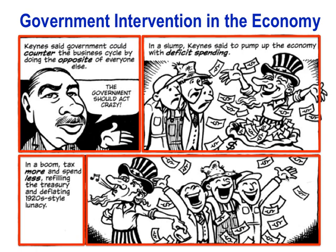Here's a cartoon describing Keynes — particularly with fiscal policy. Keynes said the government could counter the business cycle by doing the opposite of everyone else; the government should act crazy. In a slump, pump up the economy with deficit spending — when everybody else is not spending, the government should. In a boom, tax more and spend less. So when everything's growing and everybody's spending like crazy, the government should stop spending and have the opposite effect of whatever the rest of the people in the economy are doing.